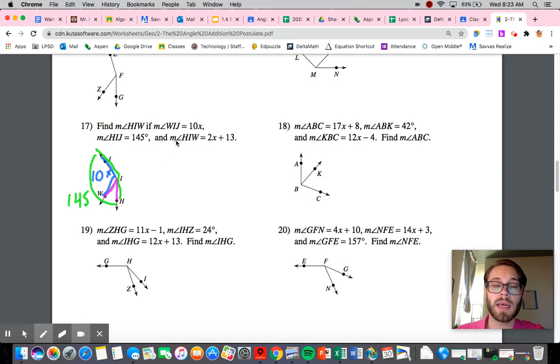And then finally it's going back and saying the measure of angle HIW is 2x plus 13. So let's just fill that last piece of information in. So this right here, I don't have enough room, so I'm going to write it over here. 2x plus 13. So now we have the initial information put in the correct locations.